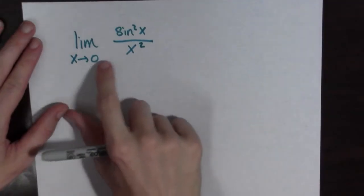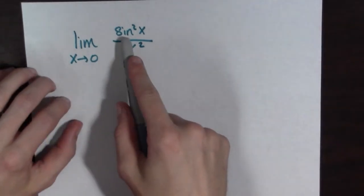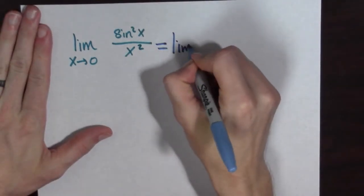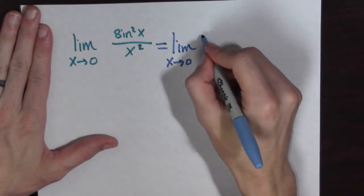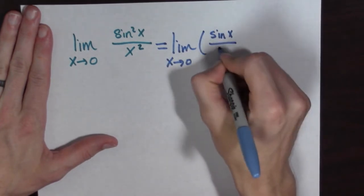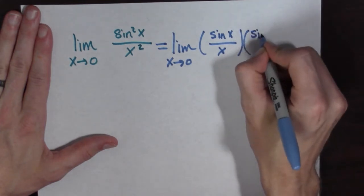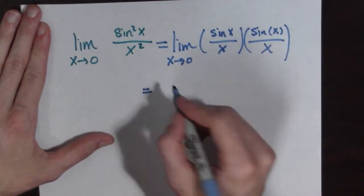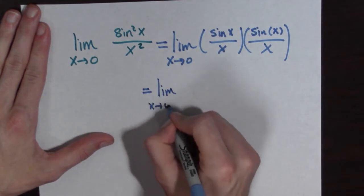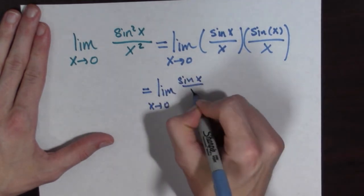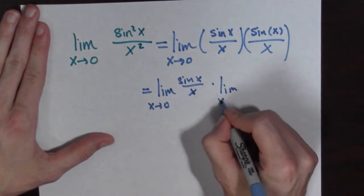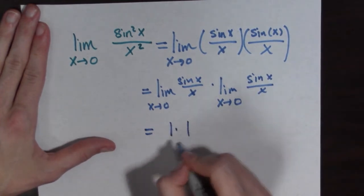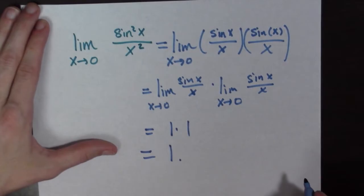Next example! Let's consider the limit as x goes to zero of sine squared x over x squared. This equals the limit as x goes to zero of sine x over x, times sine x over x. We can separate the limits: the limit as x goes to zero of sine x over x, times the limit as x goes to zero of sine x over x. This equals one times one, which equals one. Done!